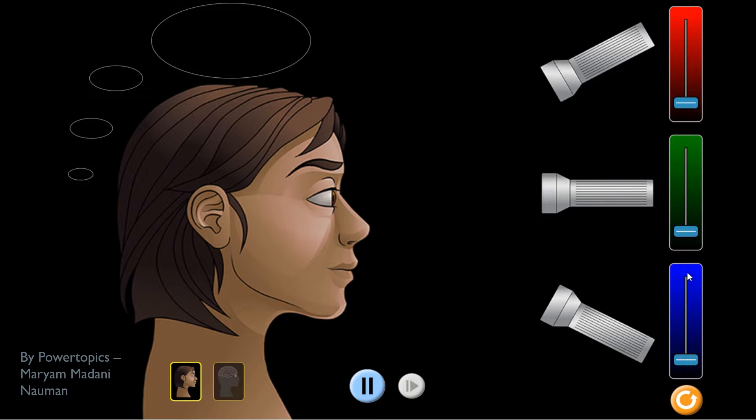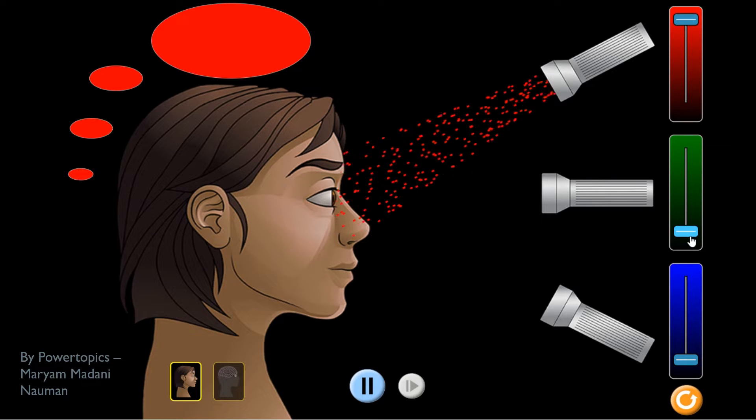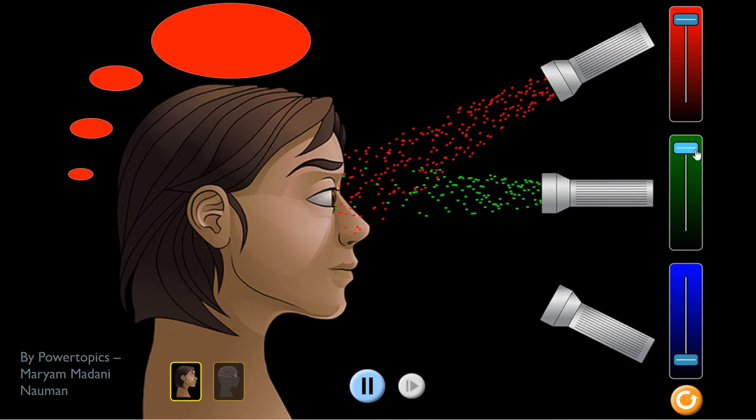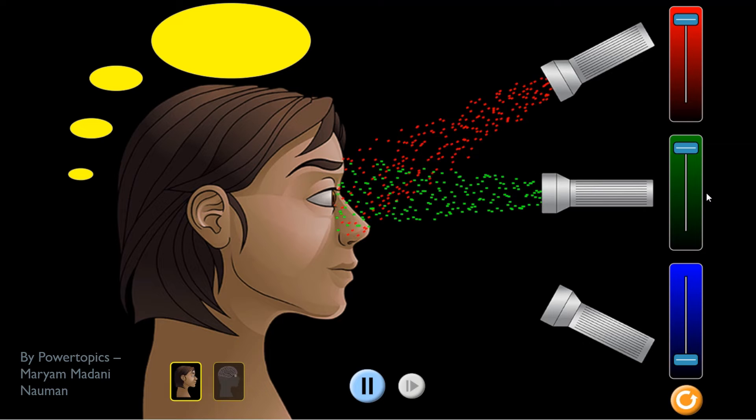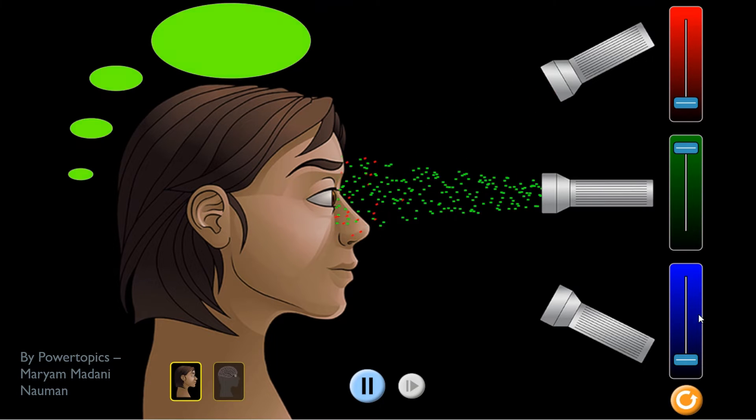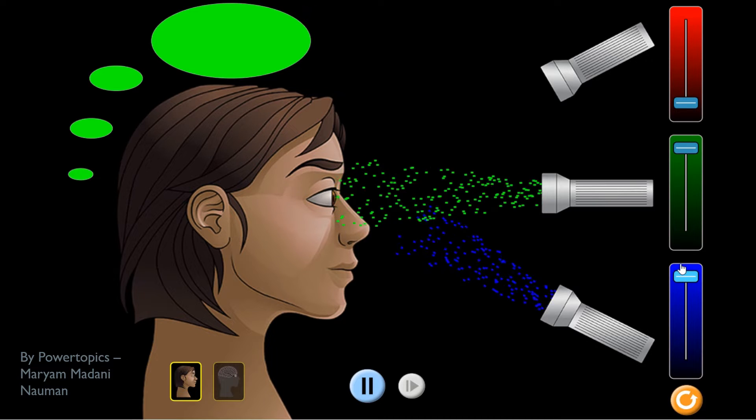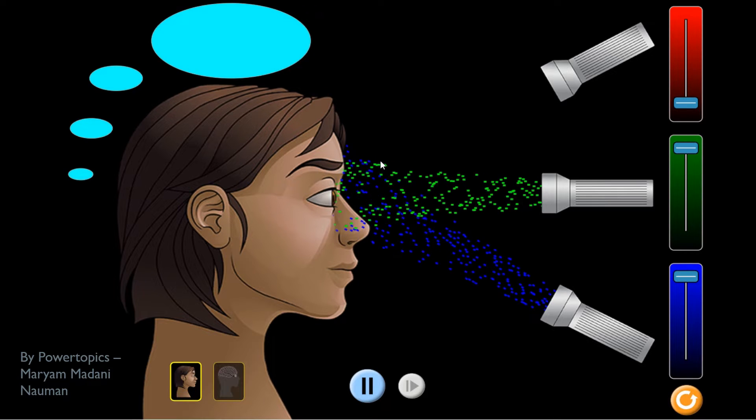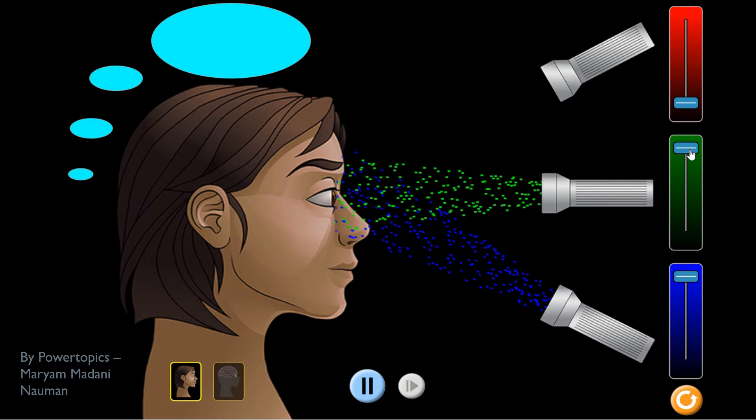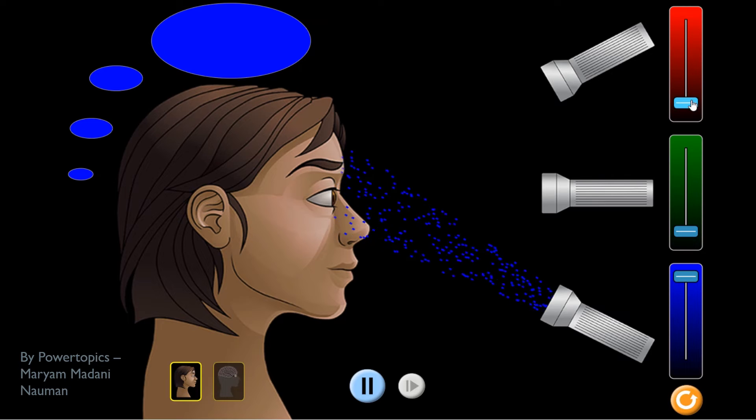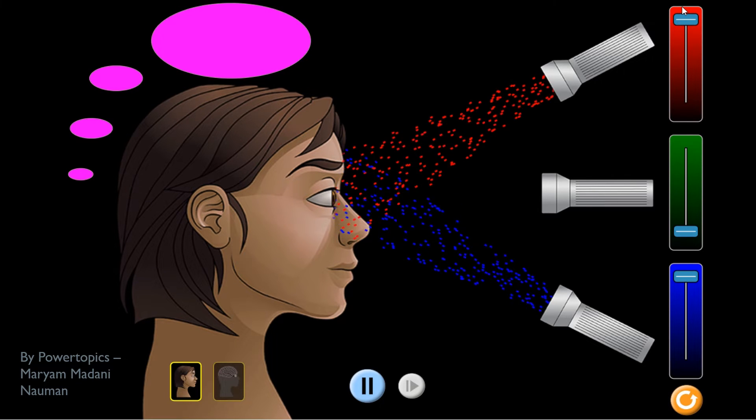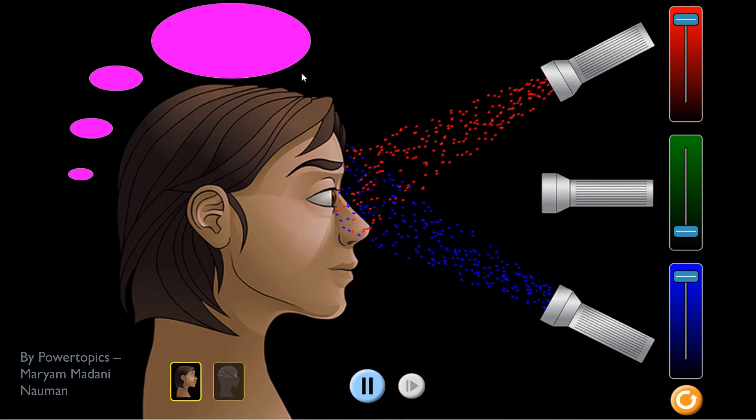Let us see what will happen if we added different colors of light together. So if we add red color light and green color light, it will create the color yellow. And let us mix green light color with blue light color and it will give us cyan. And now let us mix blue light color and red light color and it will give us magenta.